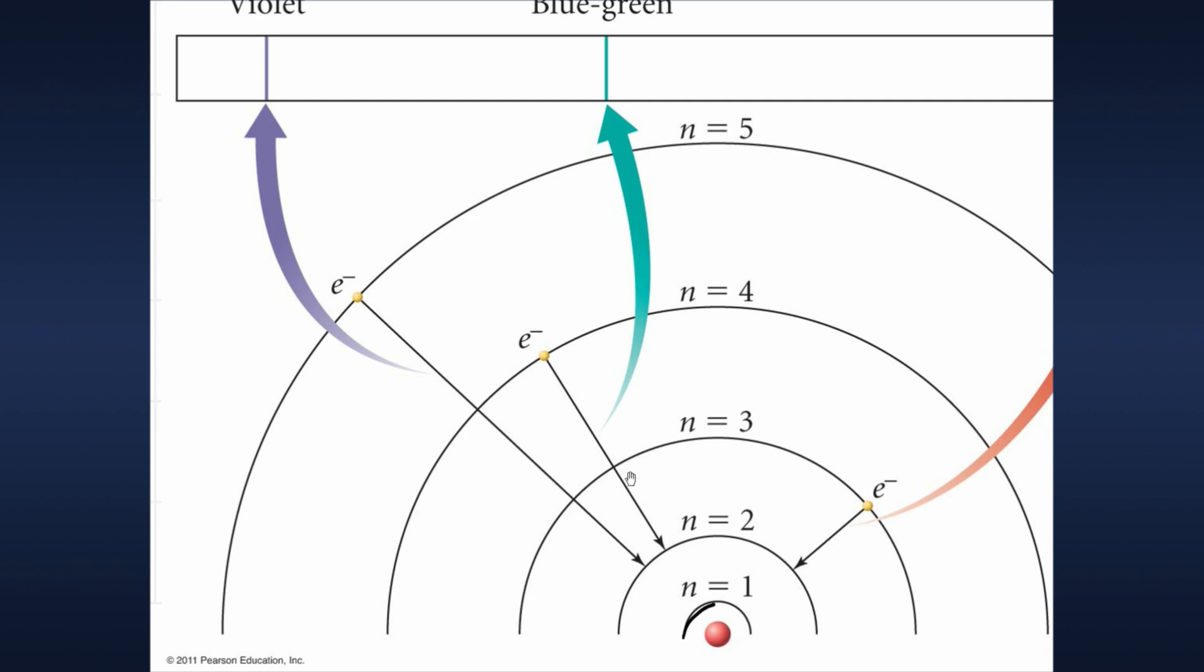The electron could be here. The electron could be here. But what he was proposing is that it could be nowhere in between. It can't be here. It could be here, or here, or here.